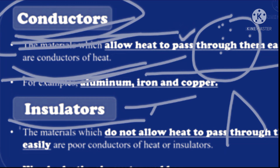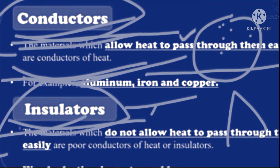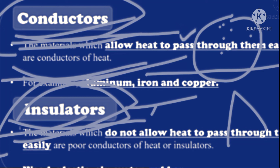Jo heat ko pass na kare usay insulator kaha jaata hai. Examples of insulators: plastic, air, water, rubber. Hamare ghar mein pressure cooker ka handle plastic ka bana hota hai kyunki plastic ek insulator hai. Similarly, copper wire plastic se coated hoti hai taaki electricity pass na ho — plastic insulator hai jo heat and electricity pass nahi karta.